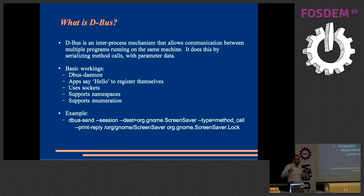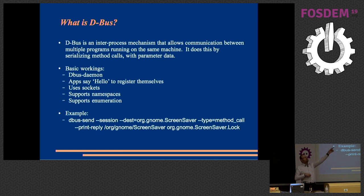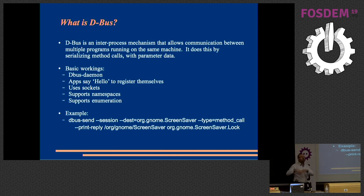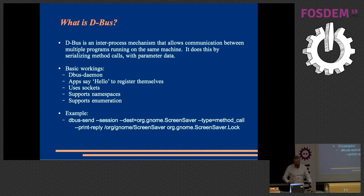D-Bus is an inter-process tool. You have a D-Bus daemon that runs when the system starts. You have an application that talks to the D-Bus library. It serializes a function call to the library. That D-Bus daemon then sends it off to another application, and the result is returned via the D-Bus daemon to your other application. This example is the first one I always play with — it allows me to control the screensaver programmatically.